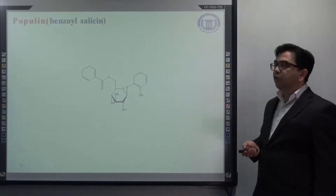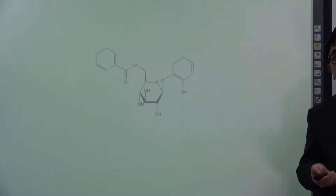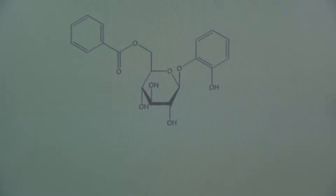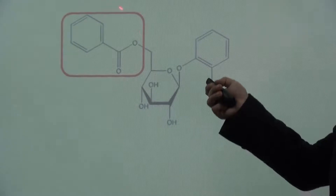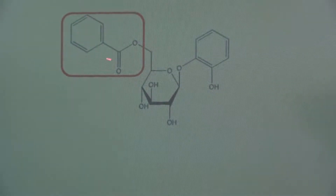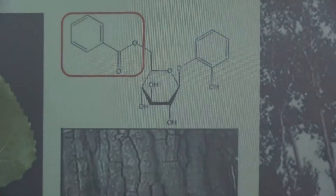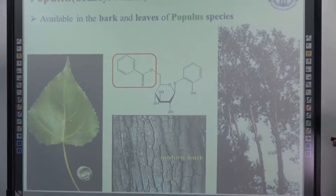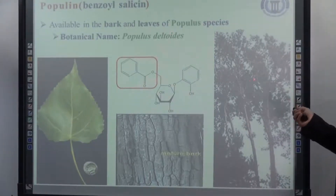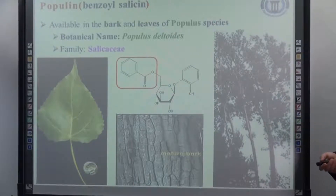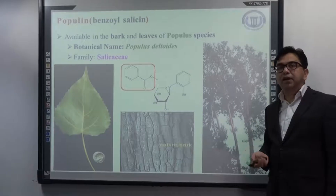The next example is populin. Populin is a benzoyl salicine — if you look at the structure carefully, the benzoyl group is attached to the sugar moiety through the CH2OH group of the sugar. It is mainly available in the bark and leaves of Populus species. The botanical name is Populus deltoides, and it belongs to the family Salicaceae — the same family as salicine.